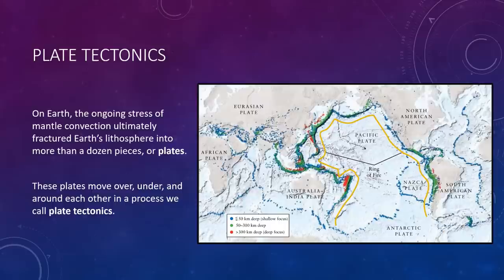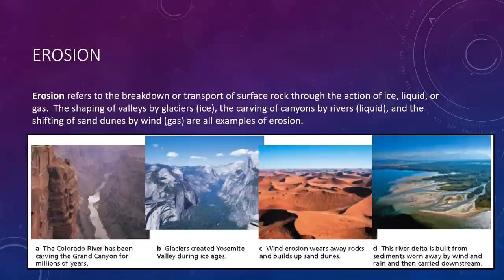On Earth, the ongoing stresses of mantle convection ultimately fractured Earth's lithosphere into more than a dozen pieces or plates. These plates move over, under, and around each other in a process that we call plate tectonics. The movement of plates explains nearly all of Earth's major geological features, including the arrangement of the continents, the nature of the seafloor, and the origin of earthquakes. Because plate tectonics appears to be unique on Earth, we'll save this for a future discussion. We'll come back to this when we talk about the Earth in particular.